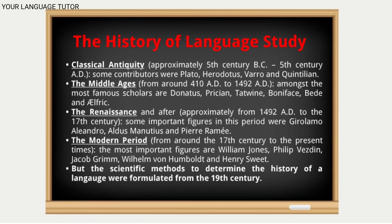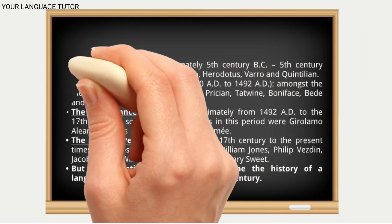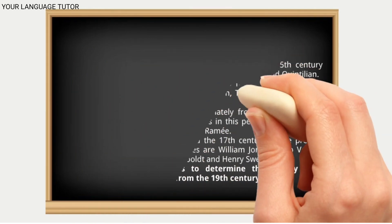But looking at when scientific methods were developed — scientific methods were formalized after the 19th century, through which the history of any language can be traced. Before that, all these scholars were working on Greek or other individual languages. William Jones again worked on Sanskrit and a few other languages. The methodology of all these personalities was not very scientific. But after the 19th century, linguists developed scientific methods, and through these approaches, the history of any language is now studied.